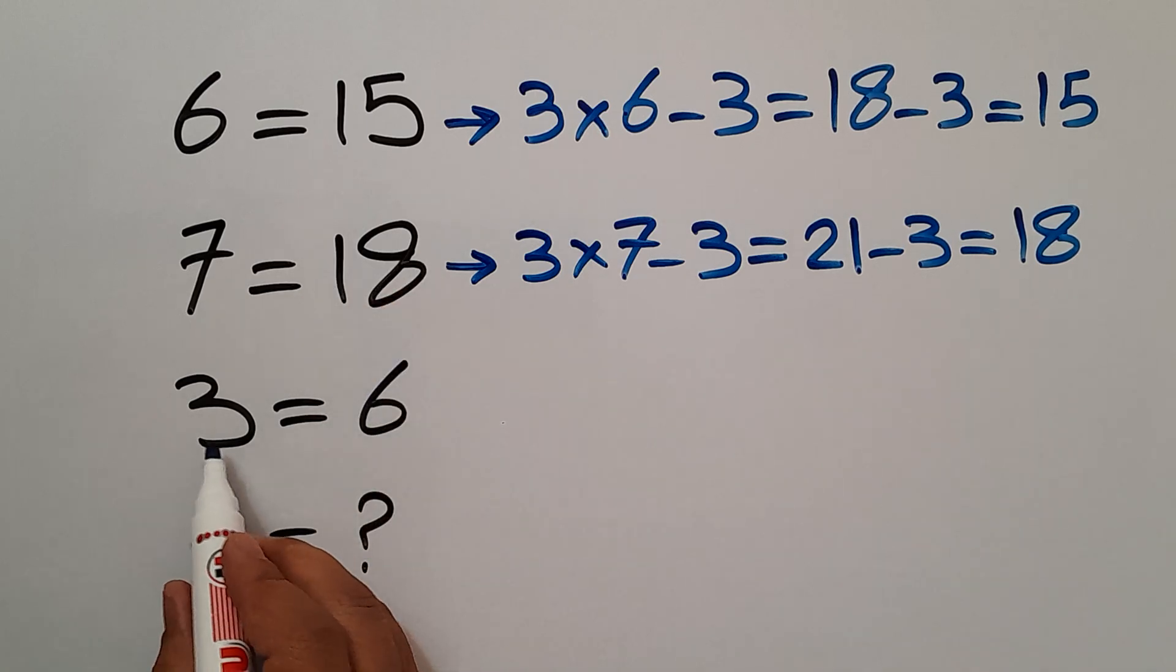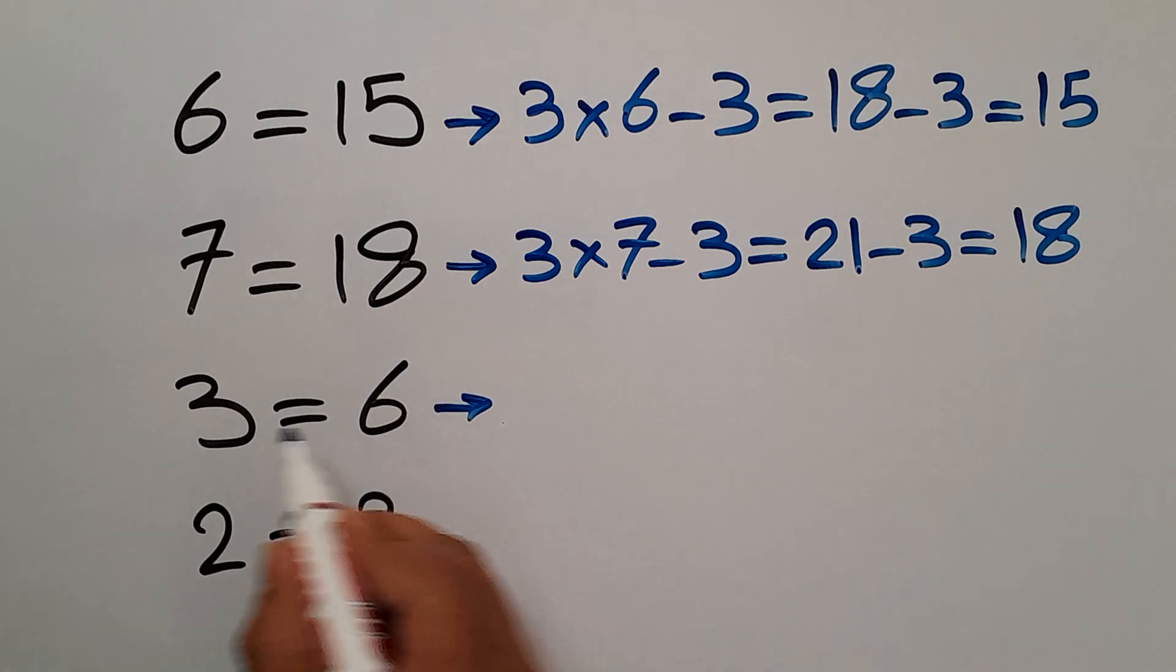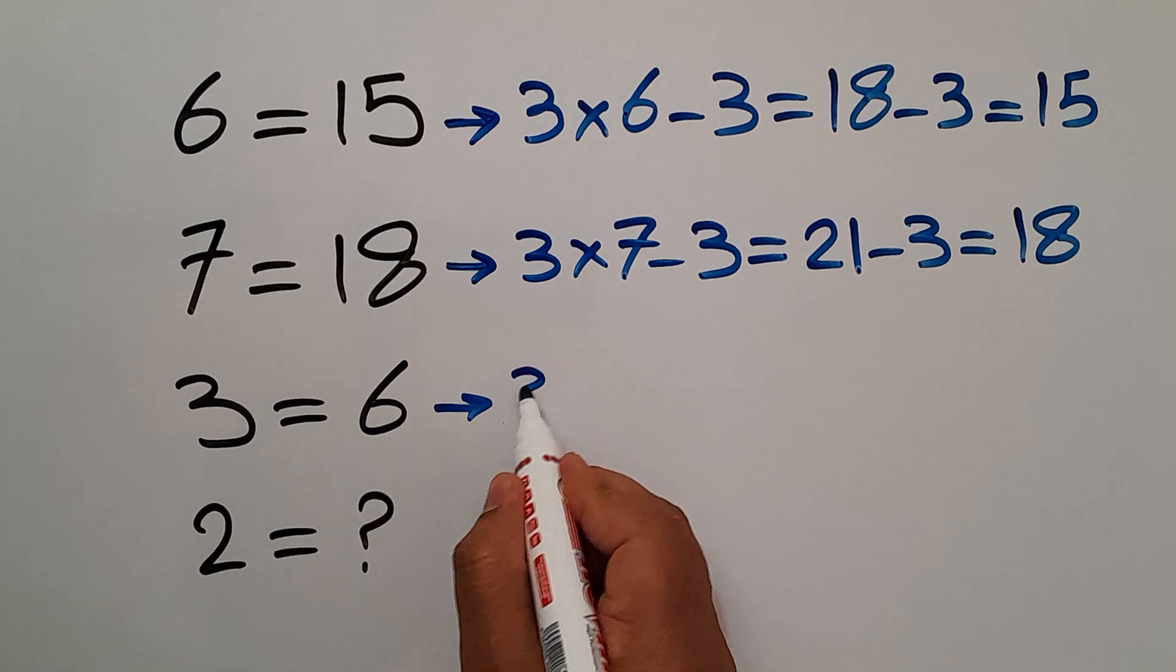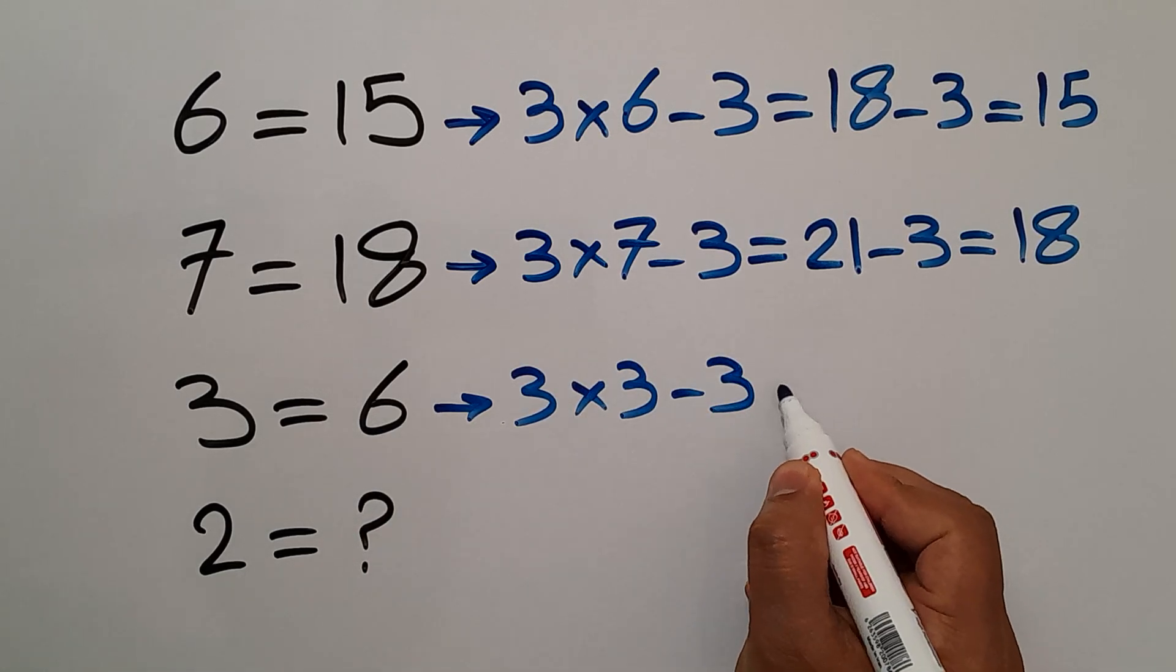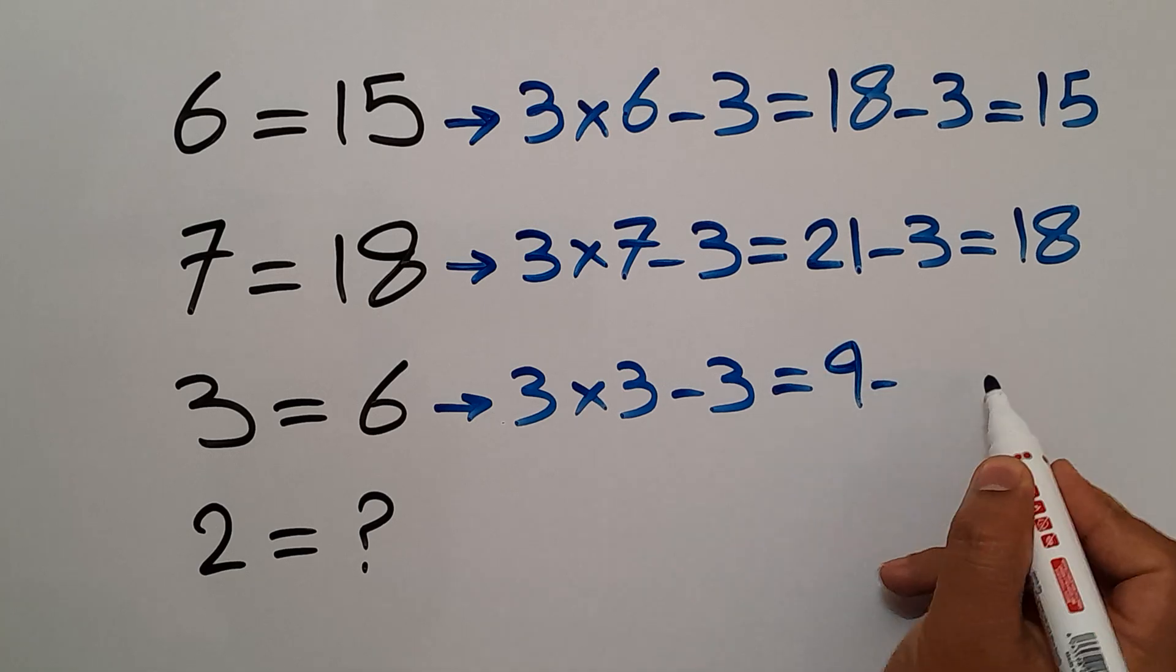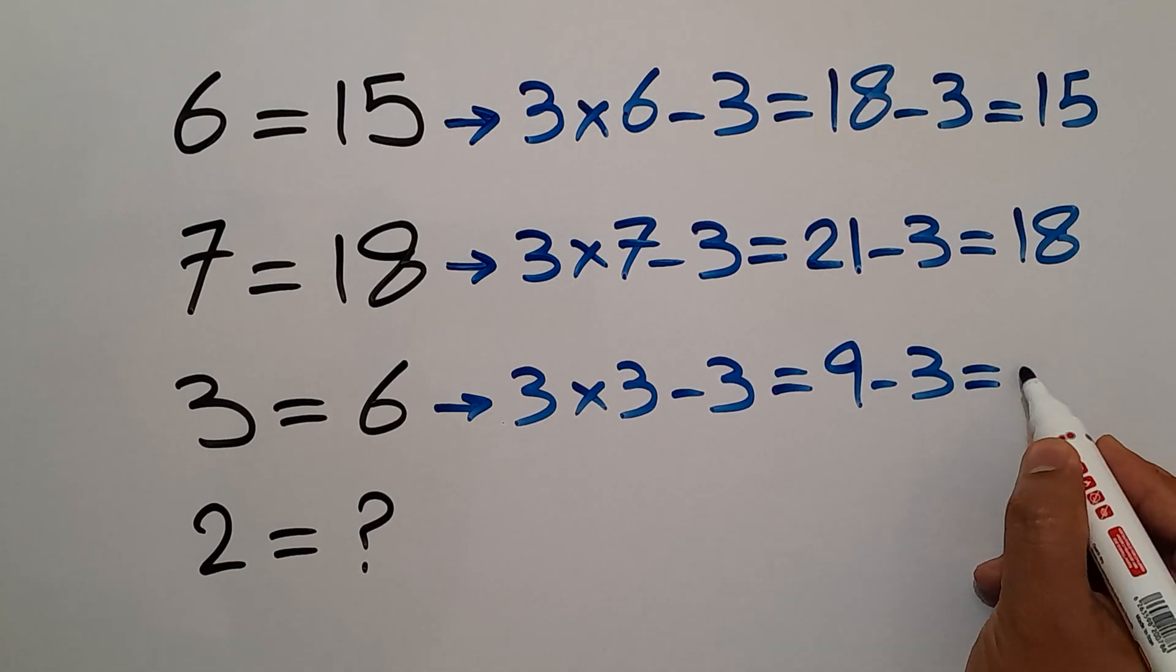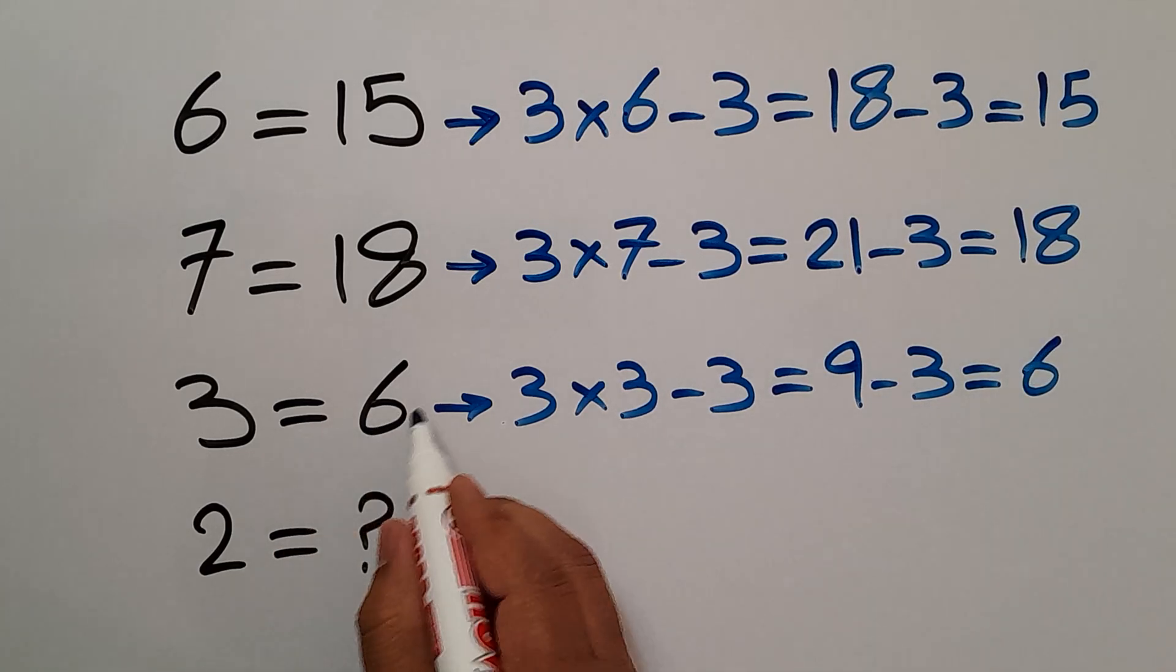And in the third line, we have 3 and 6. 3 times 3 minus 3 equals 9 minus 3, which equals 6, the right-hand side number.